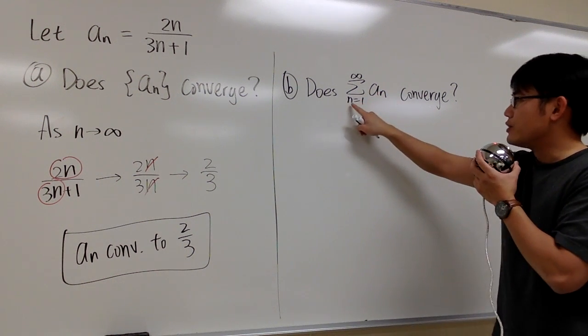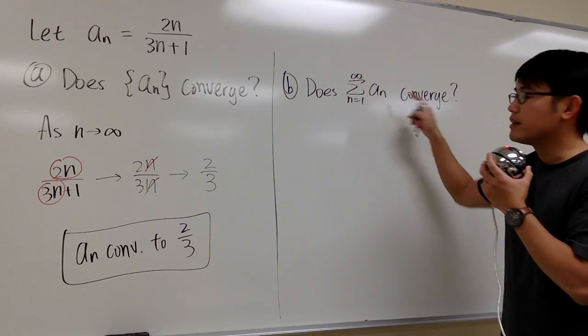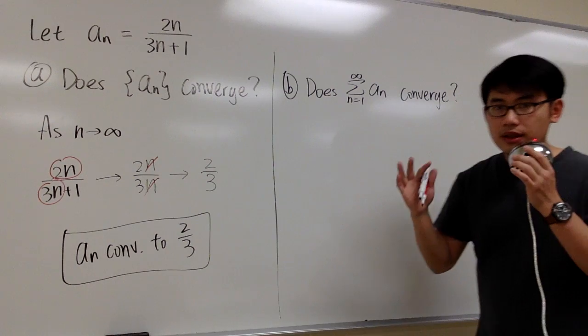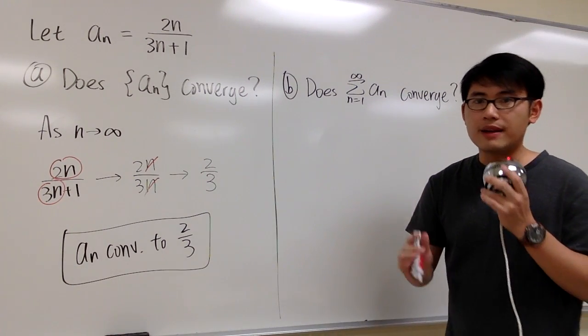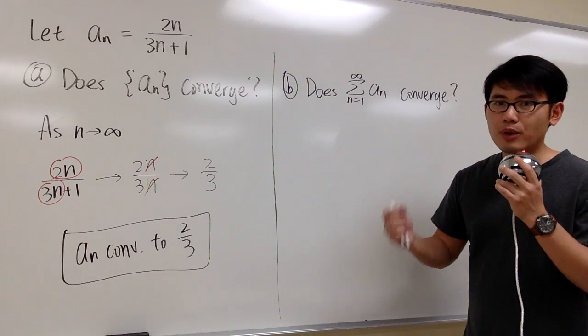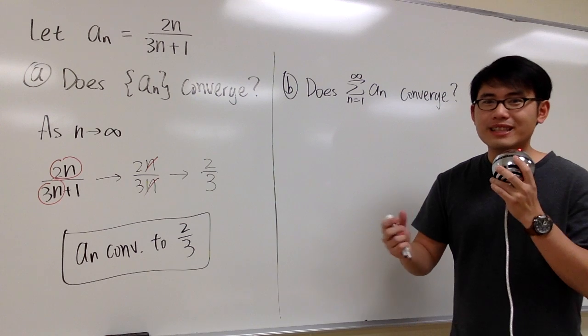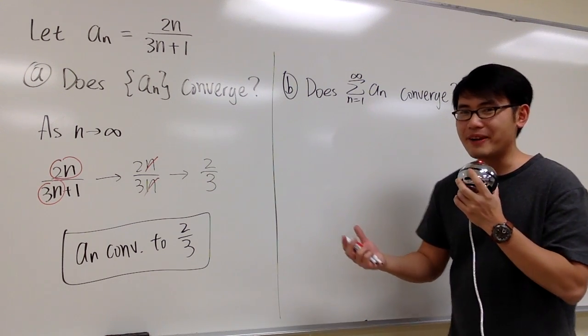Does the series, the summation from 1 to infinity a_n converge? So the difference between a sequence and series is that a series is a sum of a bunch of numbers, and those numbers are just a sequence.